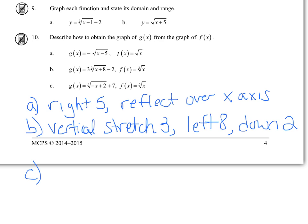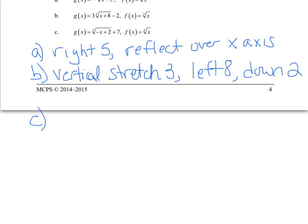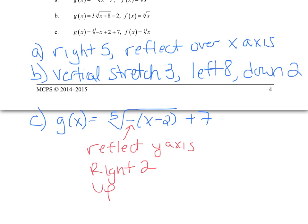Now C, we actually have to do a little bit of work before we can describe the transformations. Because of the negative on the x, we have to factor that out so that we get the correct left or right transformation. So now this negative means it's been reflected over the y-axis. It's gone to the right 2 and up 7.